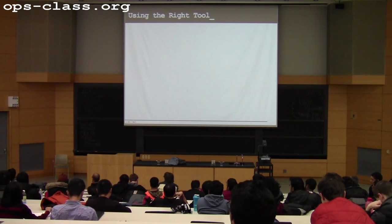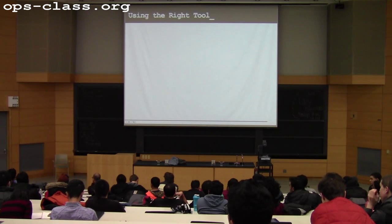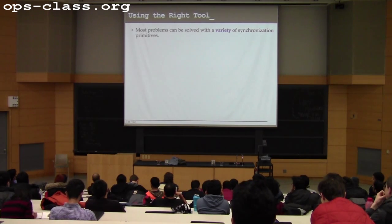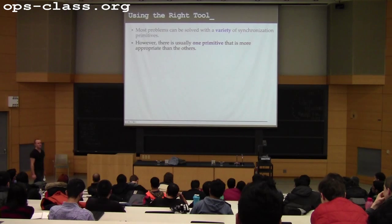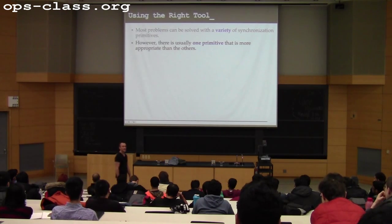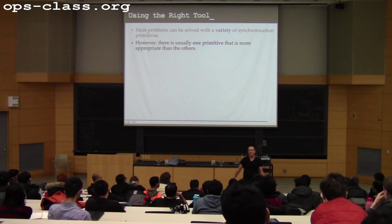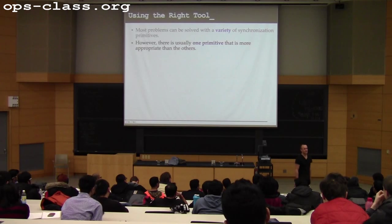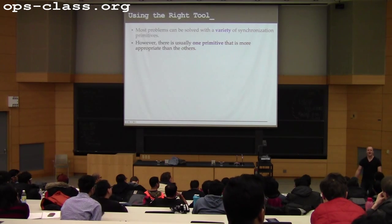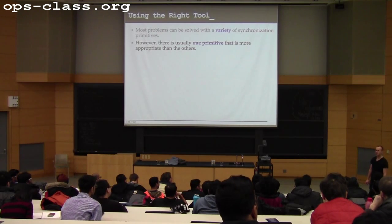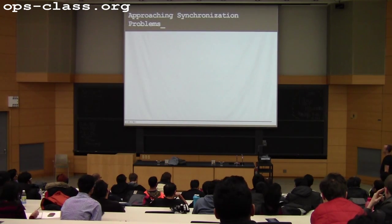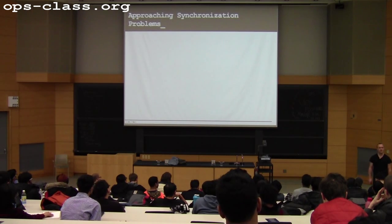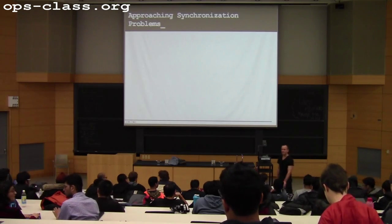Final notes: many problems can be solved with a variety of synchronization primitives, but there's an art to choosing the right one. Usually one primitive will feel more appropriate than others. If you start a synchronization problem with the wrong primitive, it's going to feel disgusting — like needing five semaphores to solve something that should be clean. You'll have a chance to practice this week. Good luck on assignment one, and I'll see you next Monday.